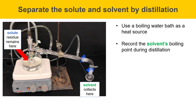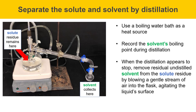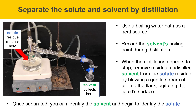You should record the boiling point observed on the thermometer during the solvent's distillation — this will be important for identifying it. As the distillation of the solvent completes, you'll notice fewer bubbles in the distillation flask, the collection of solvent in the collection flask slowing and stopping, and the temperature on the thermometer may drop. When you reach this point, there'll be a little residual solvent remaining in the solute. You'll need to get rid of that by blowing a gentle stream of air into the solute flask to evaporate this residual solvent, helping to purify the solute. Then, once separated, you can identify the solvent completely and begin to identify the solute.